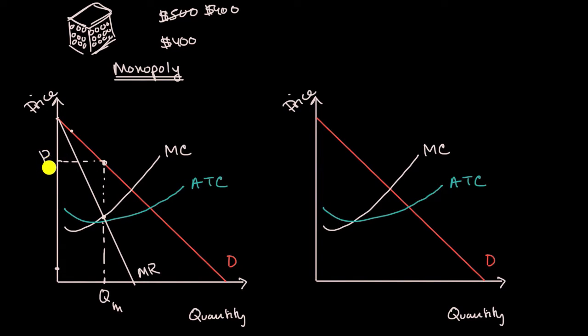So this monopoly firm would be able to get that price. And we can think about what its economic profit would be. On every room in this case, it charges that price, and its average total cost is this blue line right over here. So its average total costs are there. So the difference is how much economic profit per room, and then you multiply that times the total number of rooms. And so this area is the firm's economic profit.